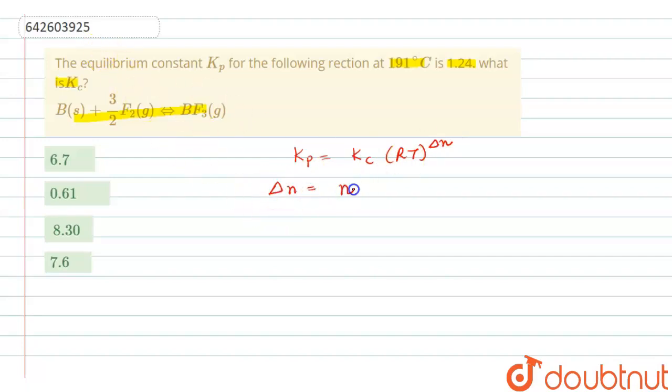So firstly we will see the number of gaseous moles of product. In the product side there is one mole of BF3, so one minus...